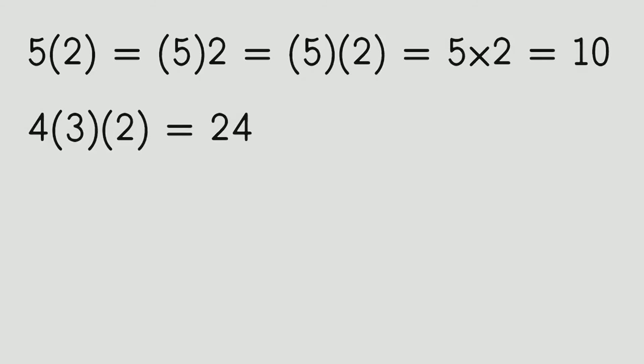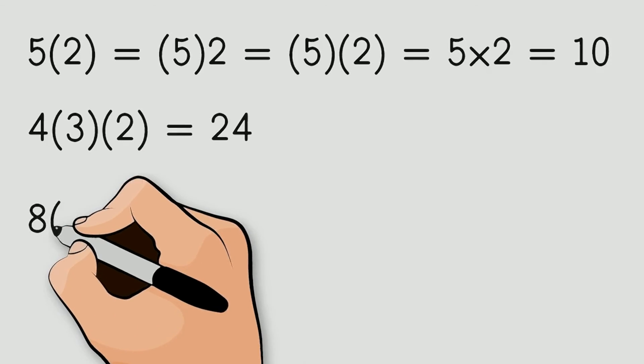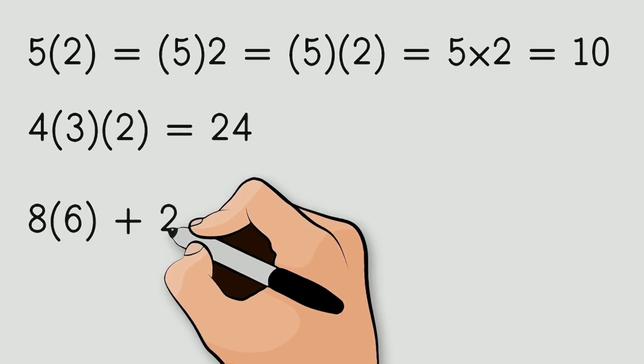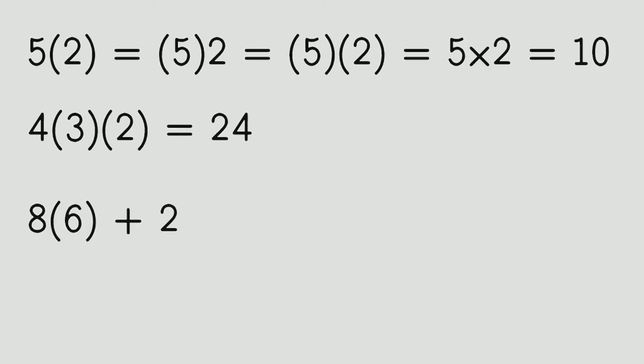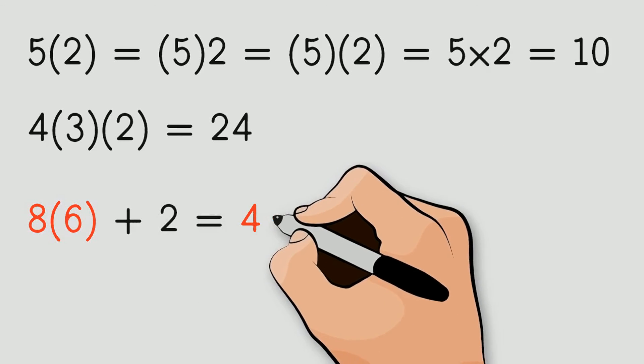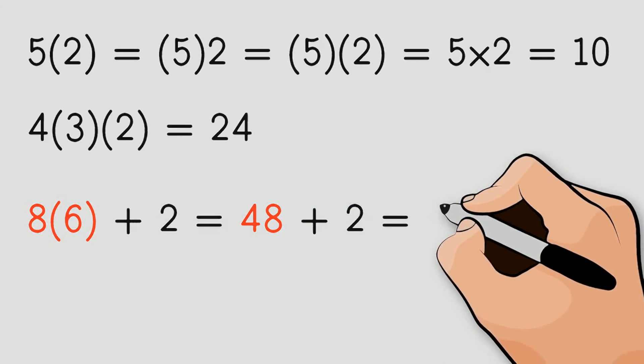Let's see a couple of examples. How can I solve this problem? That's right! I have to multiply 8 times 6, which is 48. And then I add, 48 plus 2, which is 50.